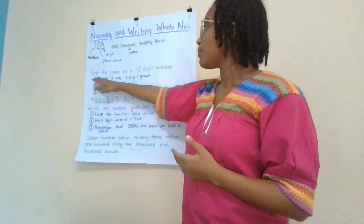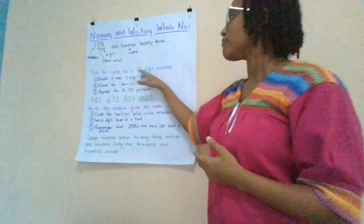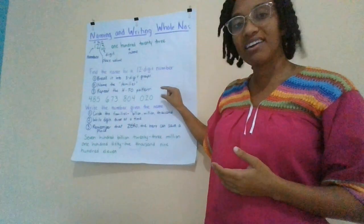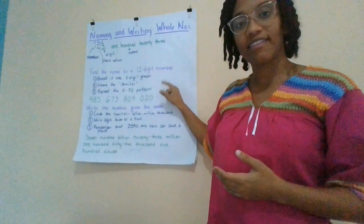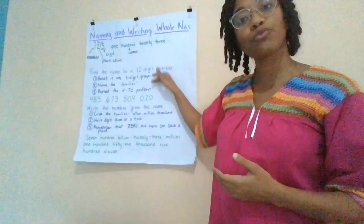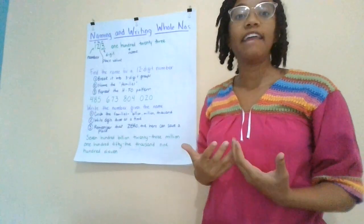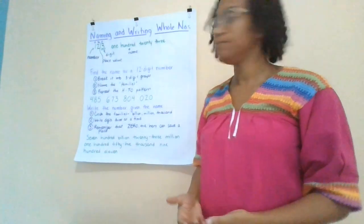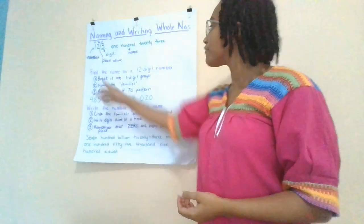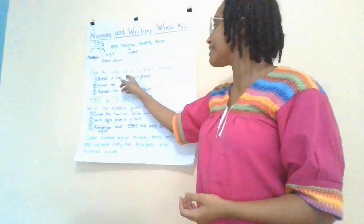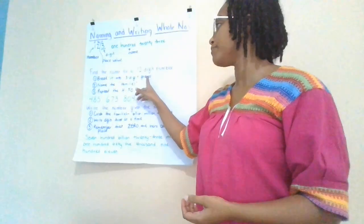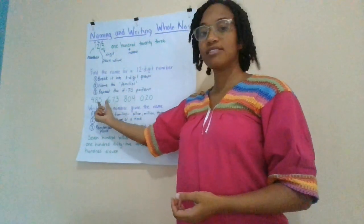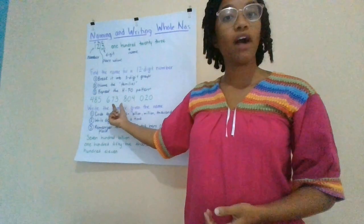First, we want to find the name for a 12-digit number. We've got a number here. Let's follow the three steps in order to find the name for this number. First, we need to break it into three-digit groups. We can do this with spaces or with commas.